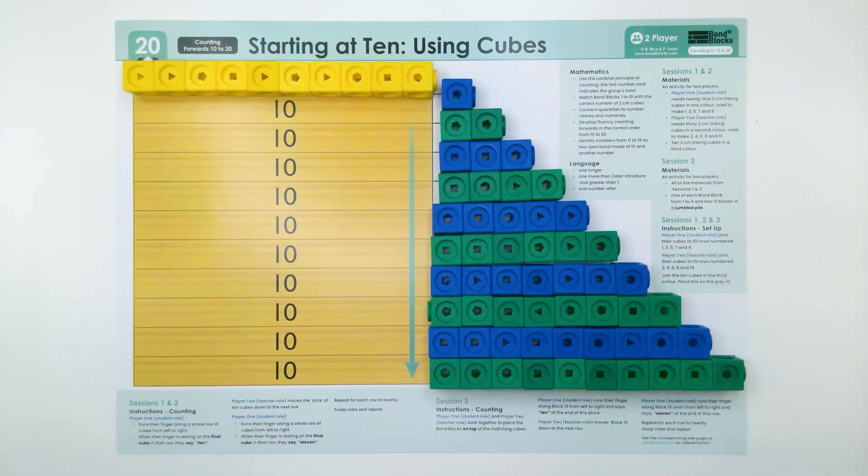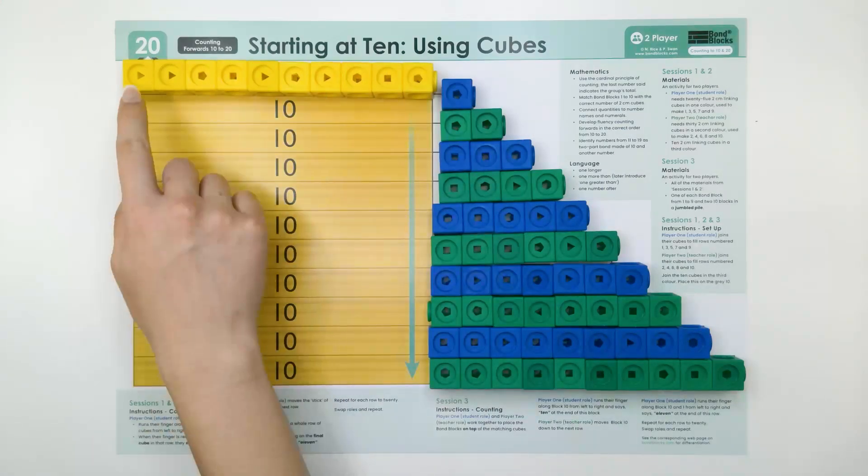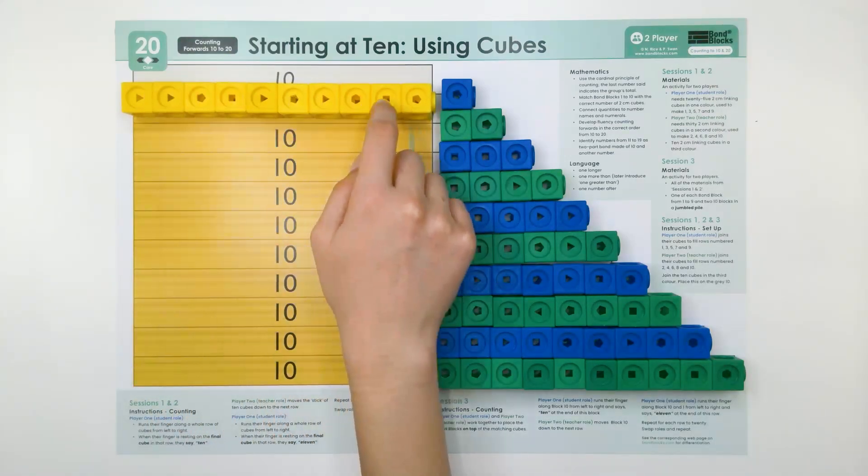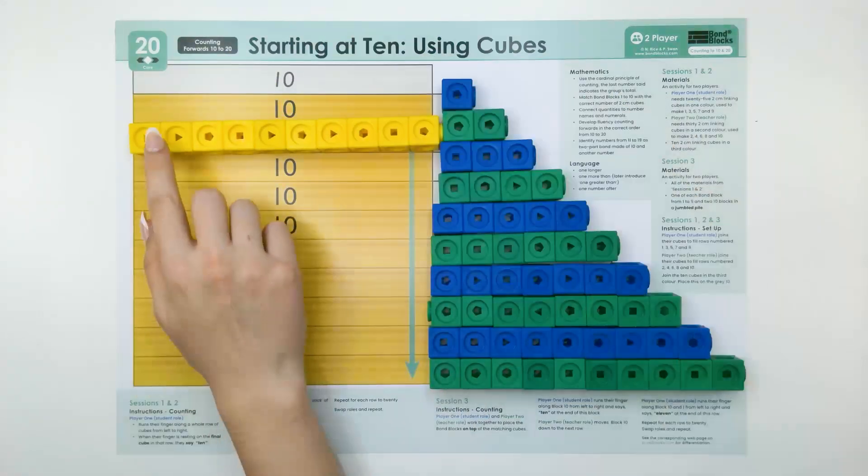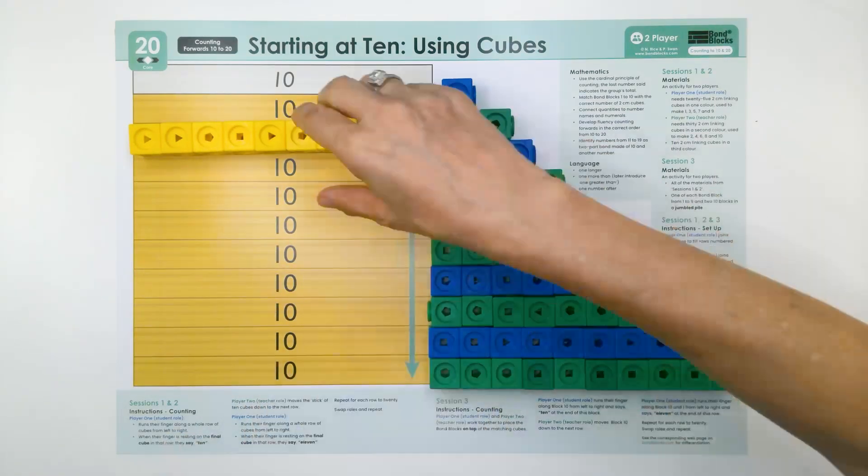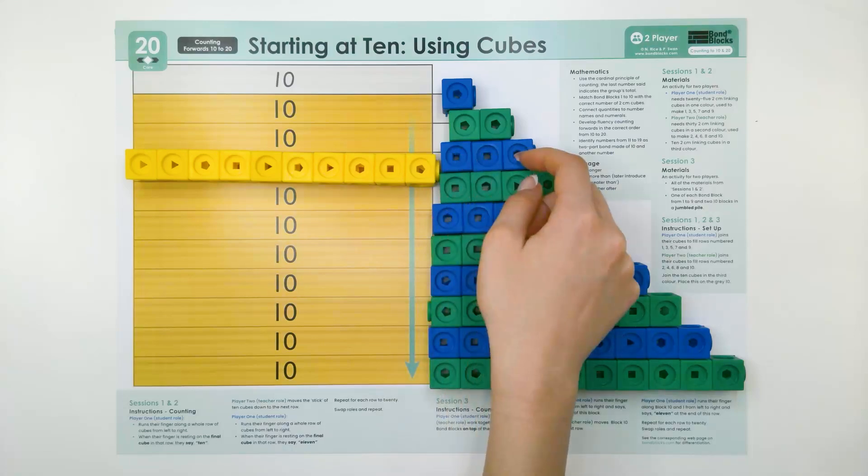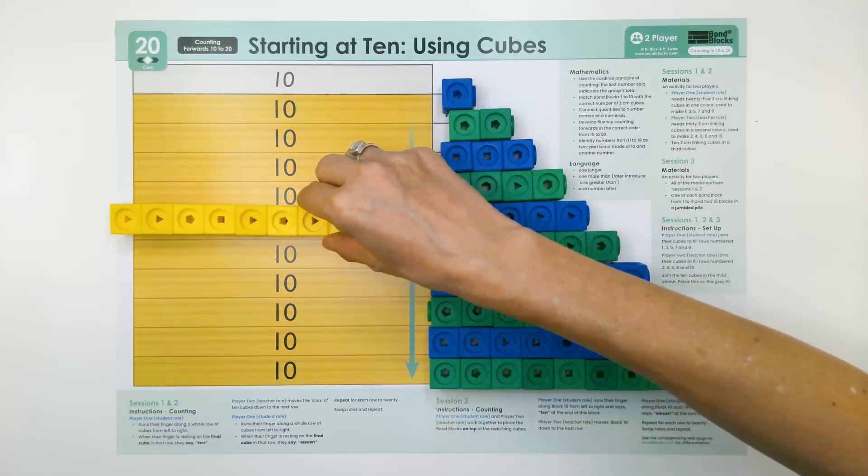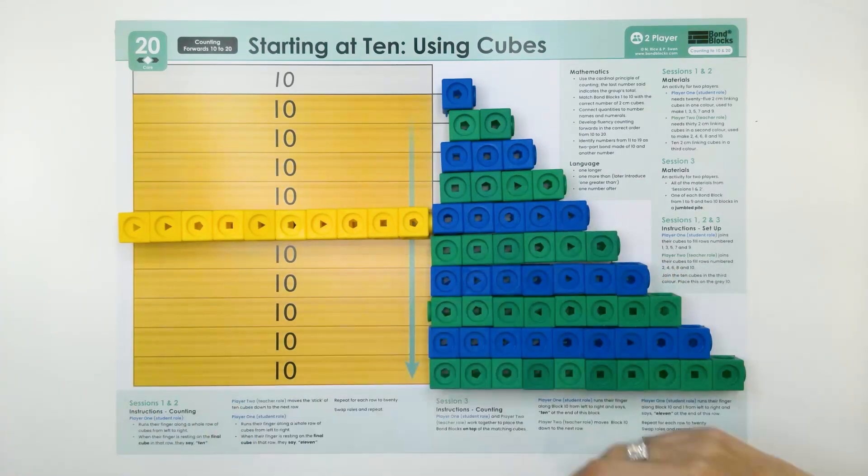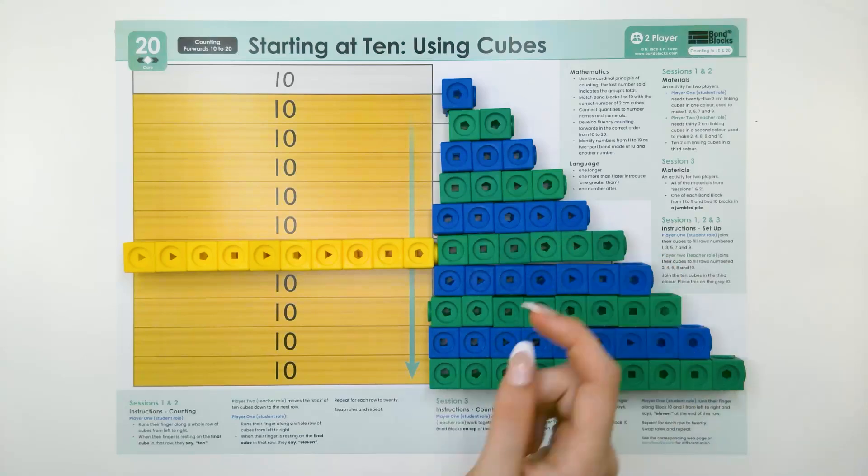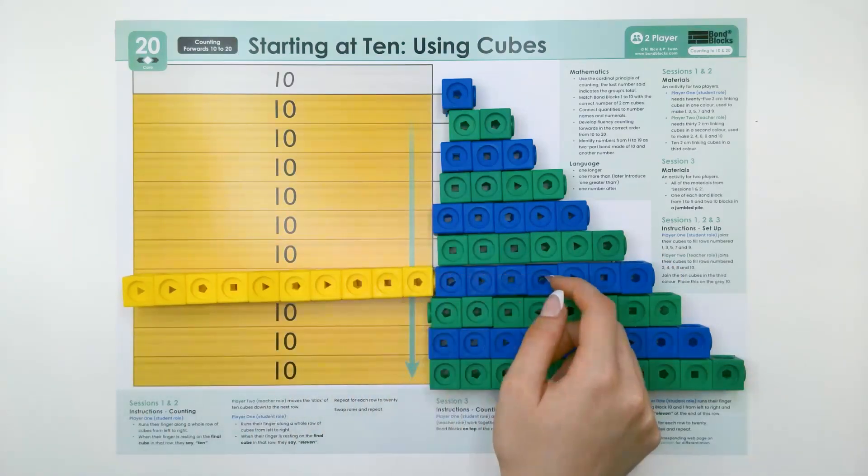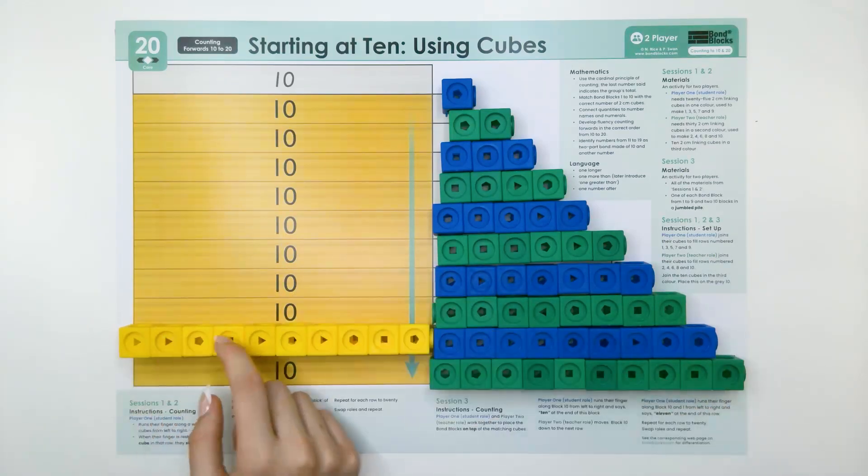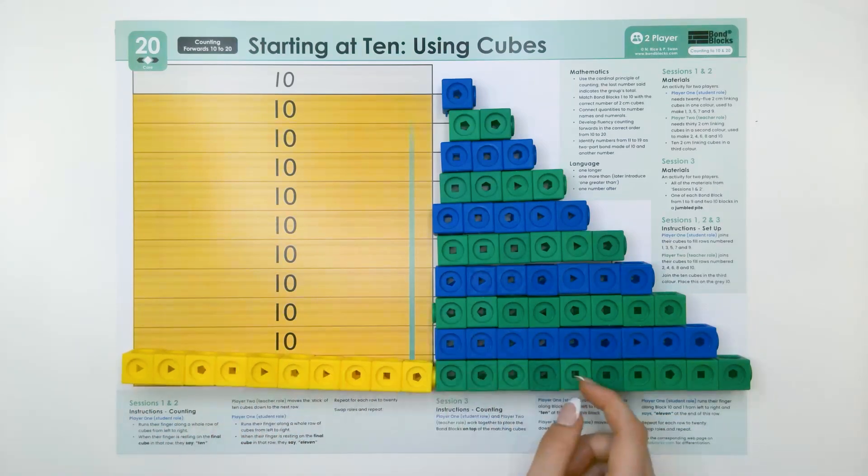Karis, now it's your turn. Start with the first one and say 10. 10. And I'll move it down for you. 11. 12. 13. 14. 15. 16. 17. 18. 19. 20.